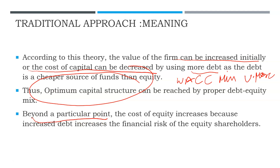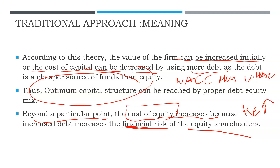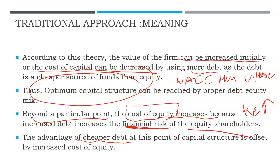You can reach an optimum capital structure, but beyond a particular point, as you keep increasing debt, a point will come where your cost of equity will start increasing. This is because increasing debt increases the financial risk of equity shareholders, and in compensation for that, they start demanding more from the firm. So their rising expectations cause the cost of equity to increase, which means weighted average cost of capital will not decrease but will start increasing.